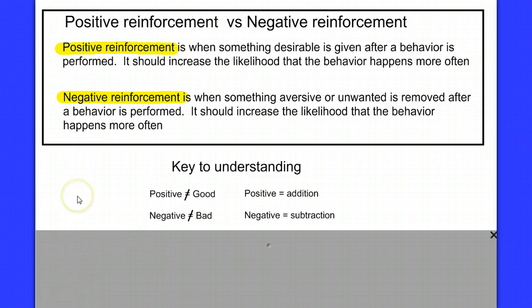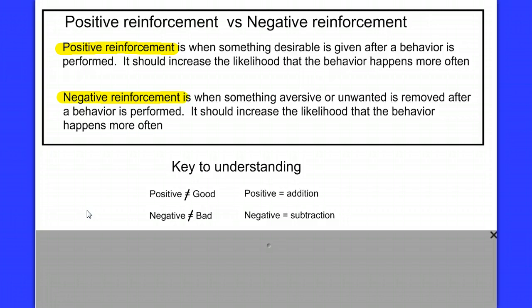How about buckling your seatbelt in the car? When you buckle your seatbelt, you perform the behavior, and as a result that annoying buzzer stops buzzing. Have you been reinforced for your behavior? Yes. Was something given to you? No — in fact, something was taken away. An aversive stimulus was removed: that buzzing noise. You've been negatively reinforced, which encourages the behavior.